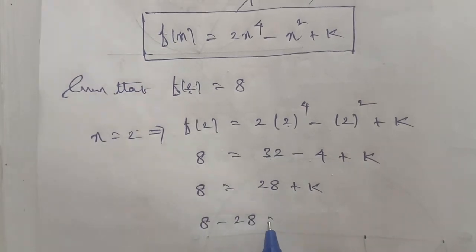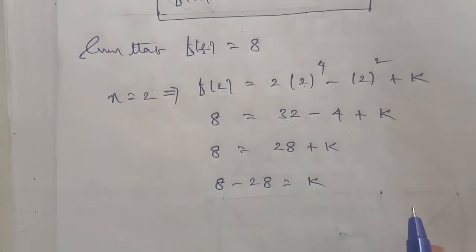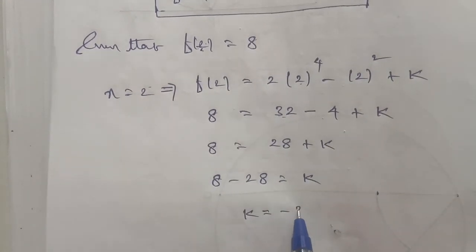Therefore, 8 minus 28 equals k, giving us k = -20.